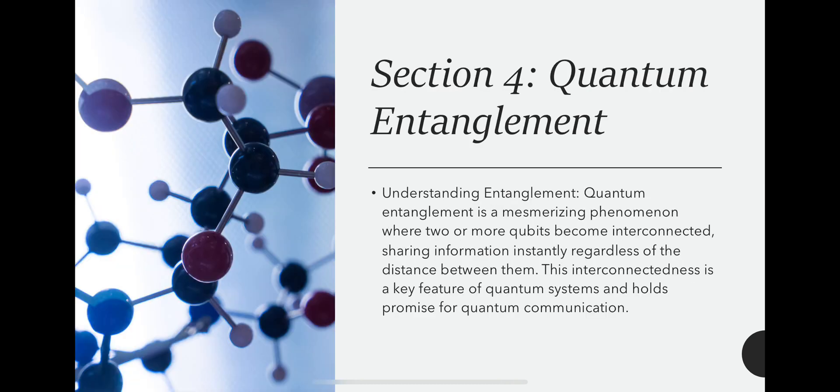Section 4: Quantum Entanglement. Understanding entanglement - quantum entanglement is a mesmerizing phenomenon where two or more qubits become interconnected, sharing information instantly regardless of the distance between them. This interconnectedness is a key feature of quantum systems and holds promise for quantum communication.